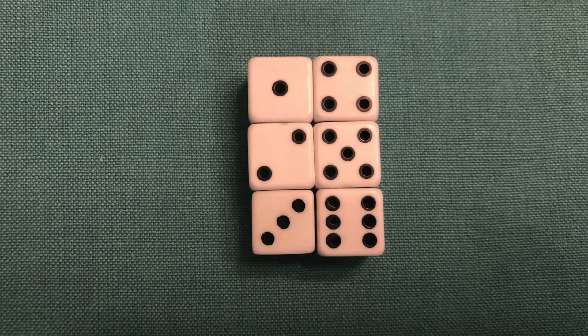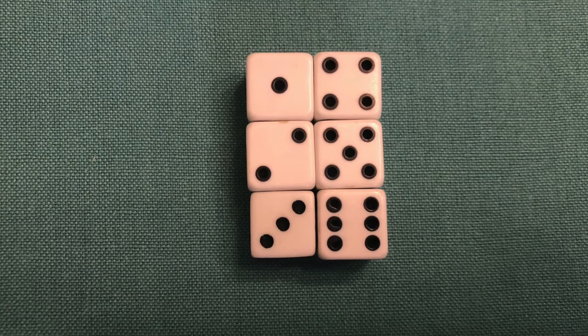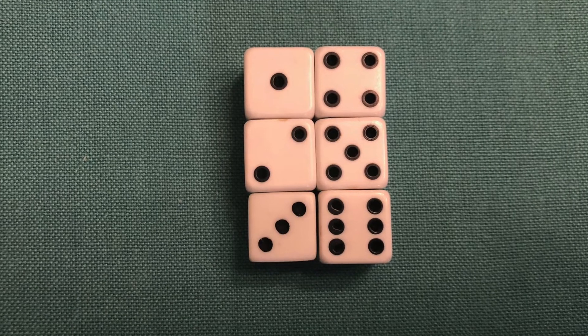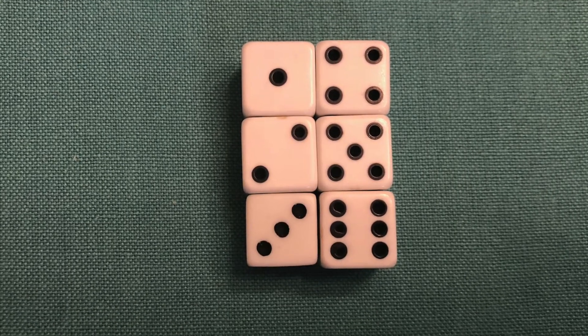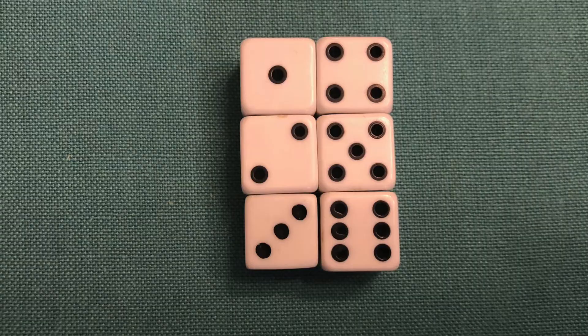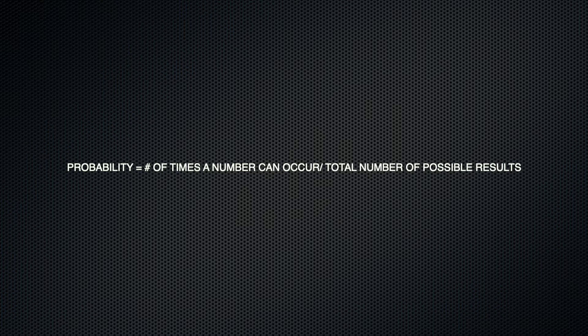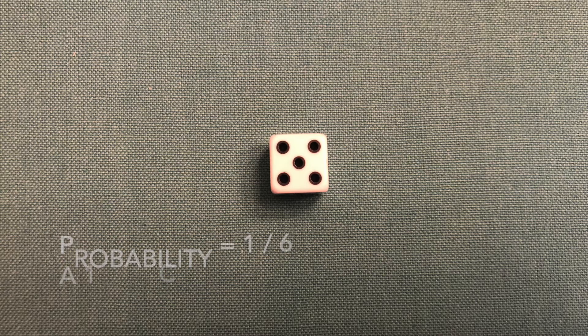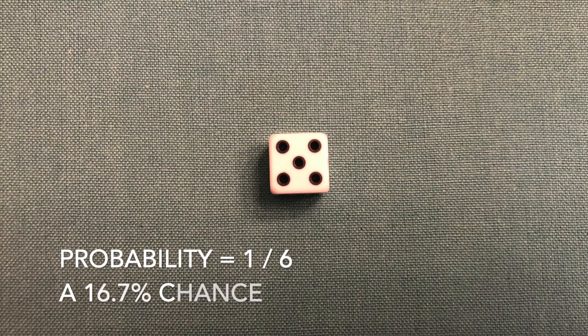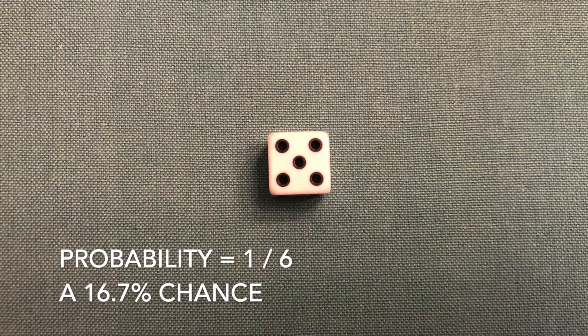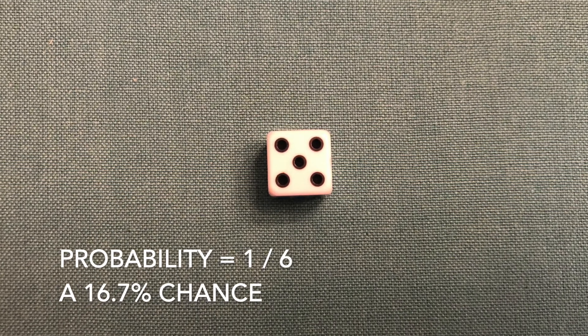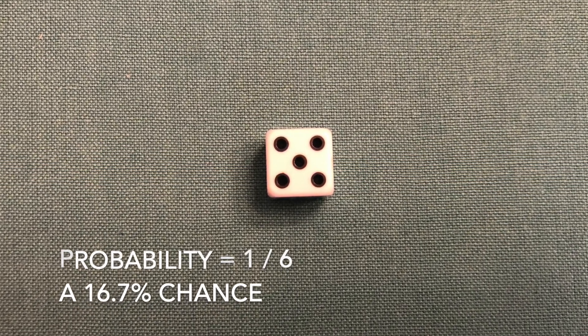If you have a single d6 dice, the probability of getting a specific number is 1 out of 6 because there is only one way to roll each number. The following equation is used for probability: probability equals the number of times a number can occur divided by the total number of possible results. For our single d6 example, the probability of rolling a 5 using this formula is 1 out of 6, which is a 16.7% chance.